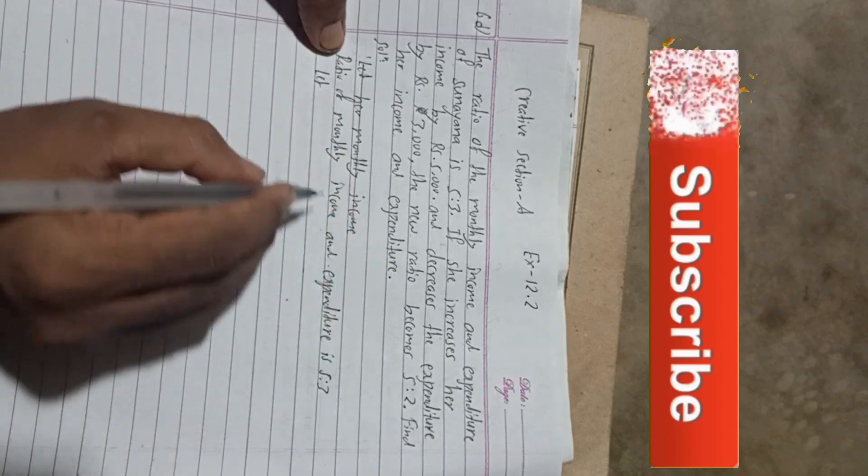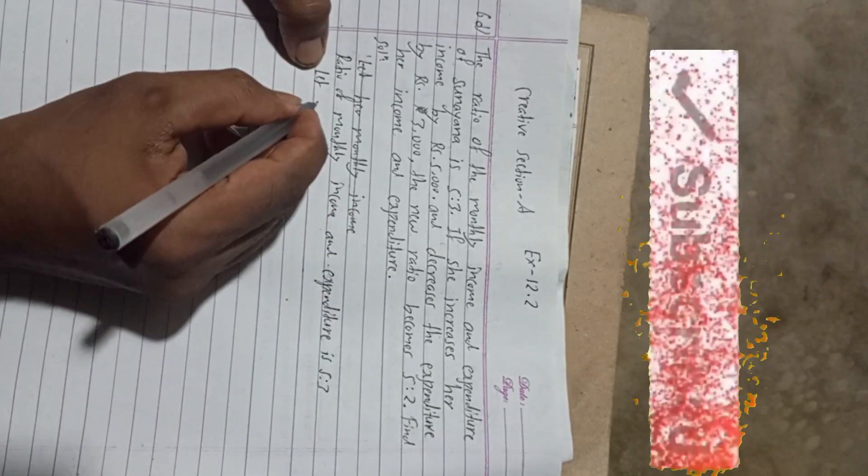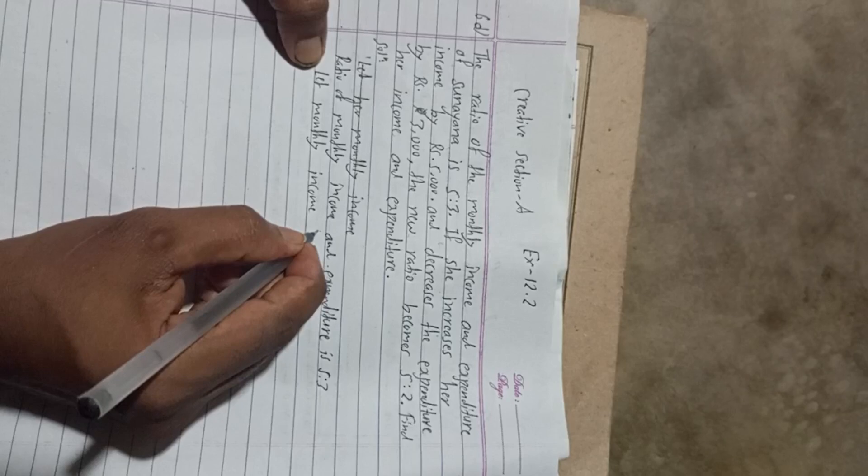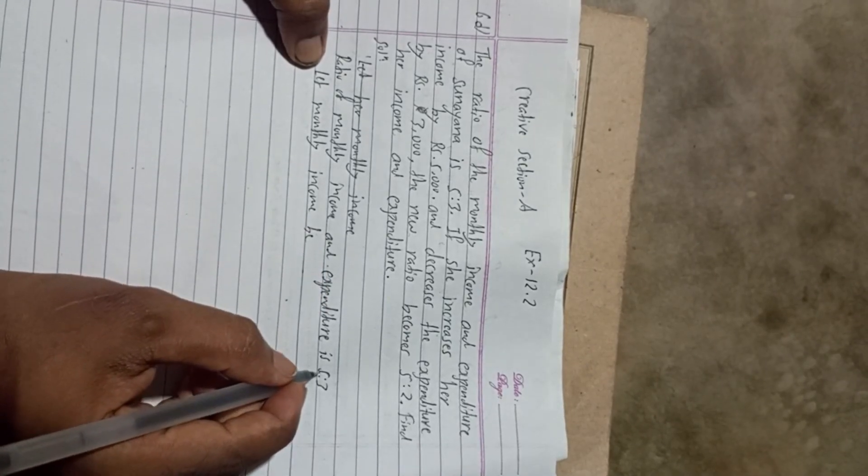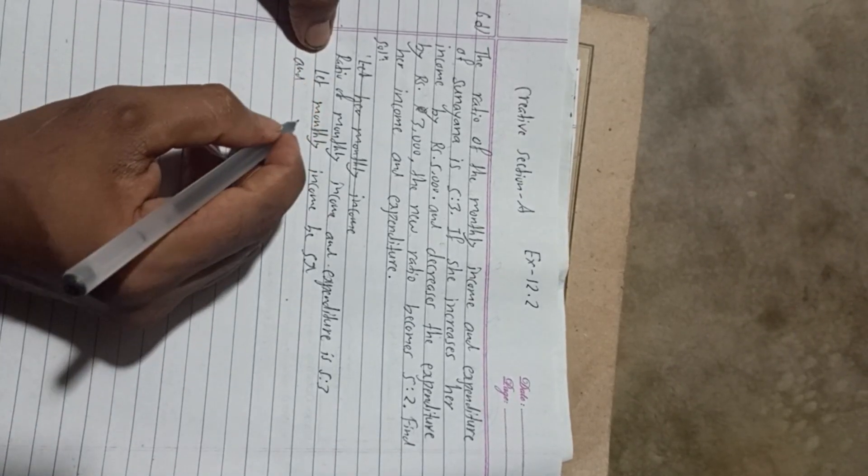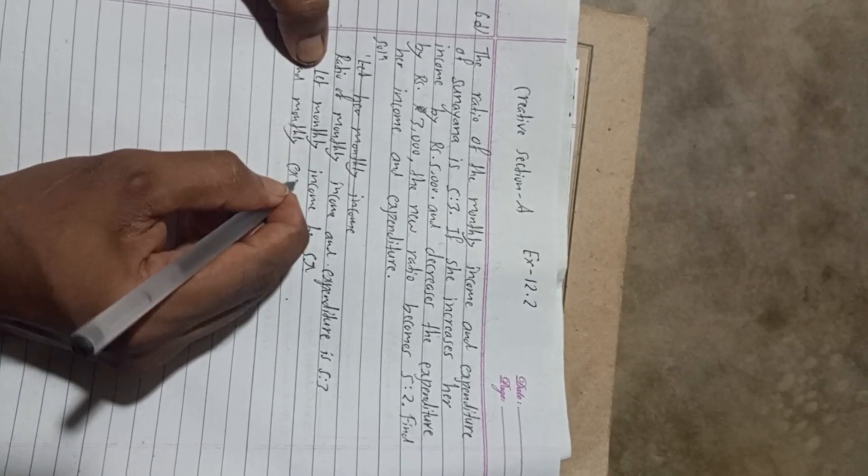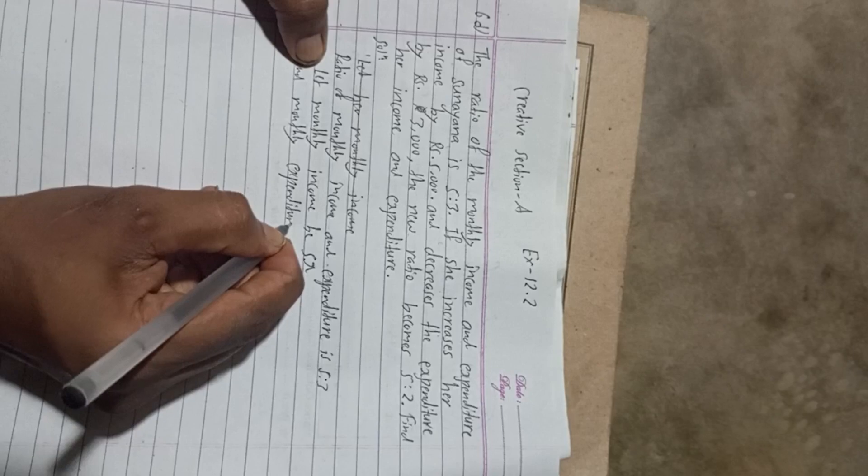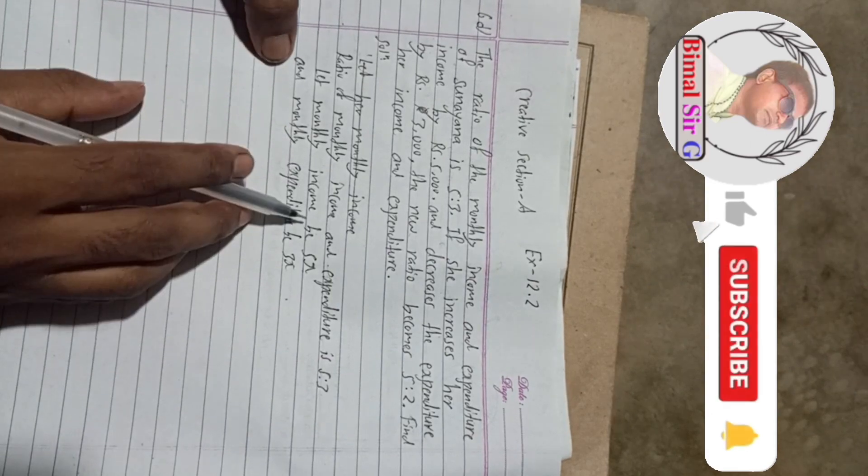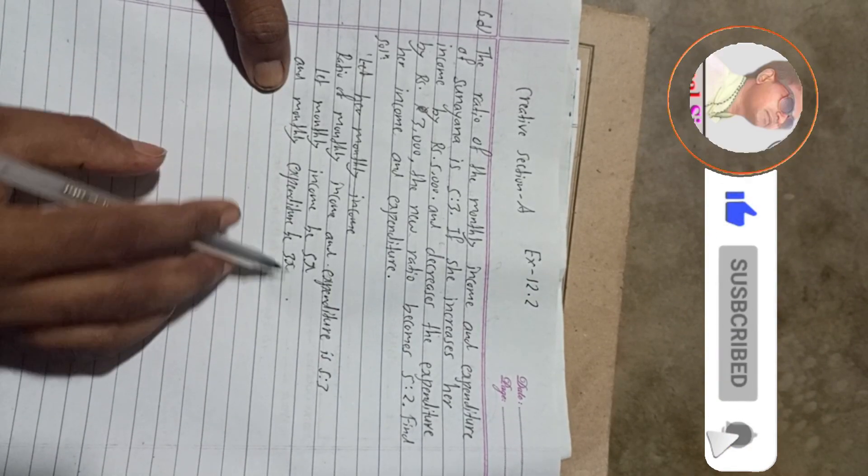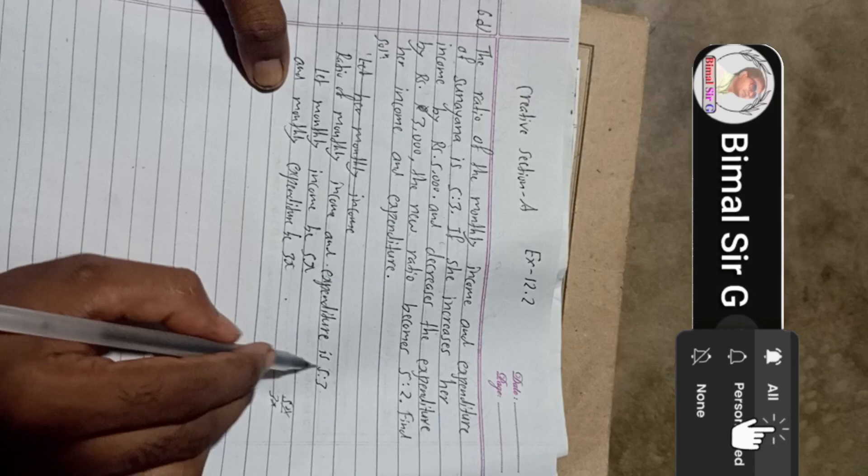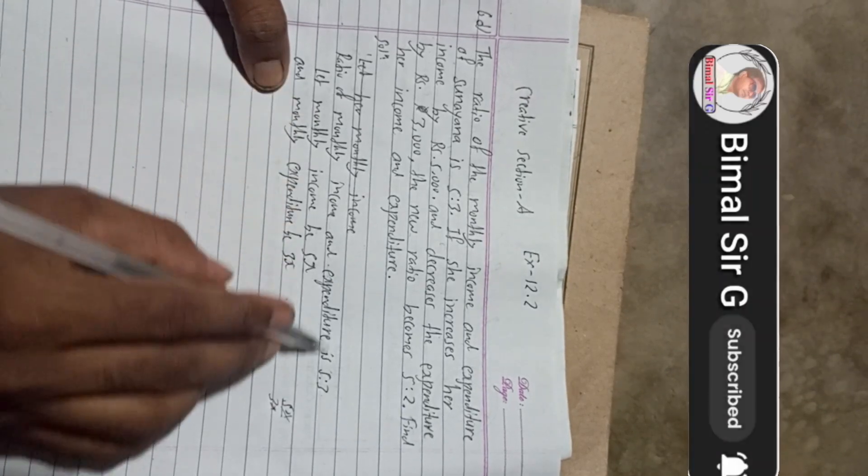Let monthly income be, this is 5, so we will write here 5y as constant. And monthly expenditure be 3y. If we suppose monthly income 5y and monthly expenditure is 3y, and if we take the ratio 5y by 3y, we will cancel and we will get this ratio. So this is the logic to consider from this given ratio.